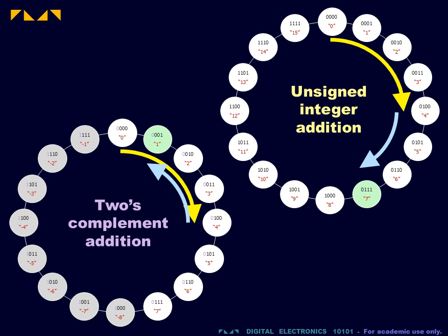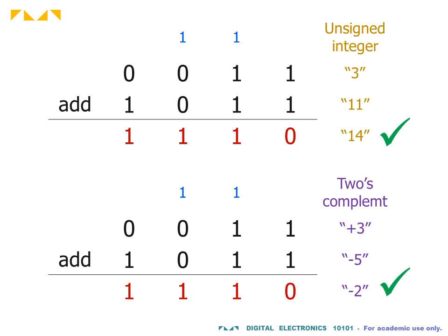As a final note, the adder can be applied to any number representation that follows the binary counting sequence. In this example, the same binary sum produces the correct answer in both unsigned integer and two's complement representation.